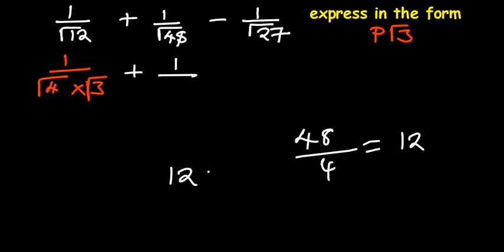So it means 12 times 4 gives us 48. Now 12 can be expressed again as 4 times 3. So 3 times 4. So you can see that we have 4 times 4 there, right?